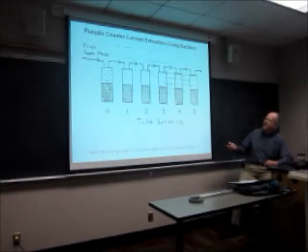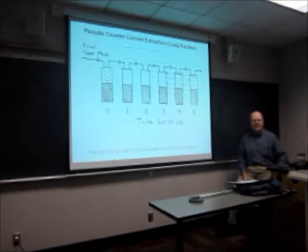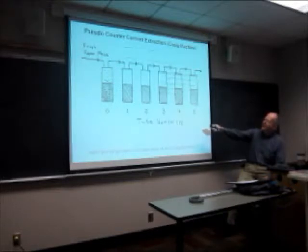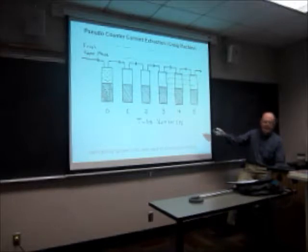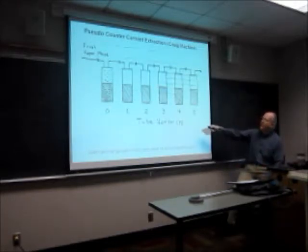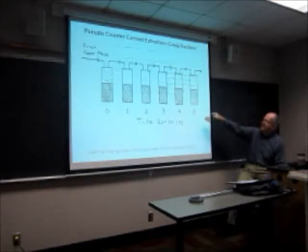In a Craig machine, you put some sample in the zeroth tube — that's for mathematical convenience. You bring it to total thermodynamic equilibrium by shaking. You then take the top layer and move it over to tube one, and add fresh hexane to tube zero — no more solute, you only put it in at the beginning. You equilibrate, shake it, then take the equilibrated top layer here and move it over, and the equilibrated layer there and move it further along, adding fresh hexane, and so on, until you get to the last tube.